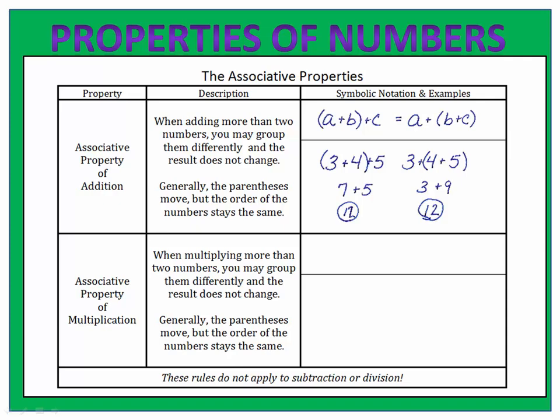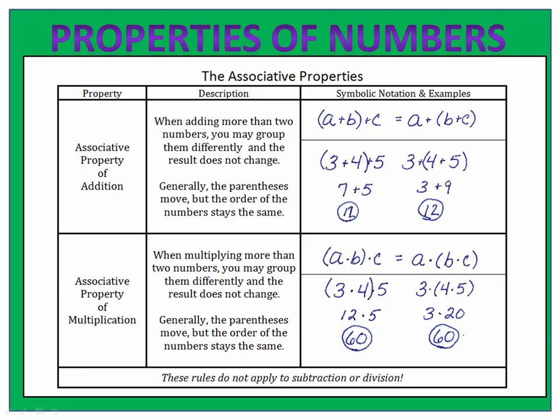Remember, the parentheses indicate the numbers we're adding first. In multiplication, the same thing is true. If we have three numbers to multiply — three, four, and five — it doesn't matter if we multiply the three and four first, or the four and five first. Either way, we'll end up with 60. In symbolic notation, we can write (a times b) times c equals a times (b times c), where either pair can be multiplied first and you'll get the same answer. These rules do not apply to subtraction or to division, so be very careful. The associative property only works for addition and multiplication.